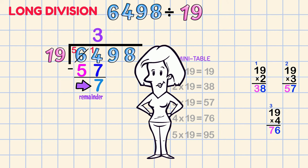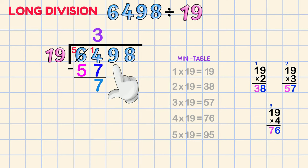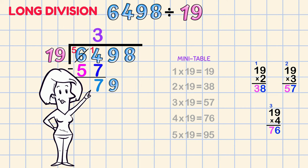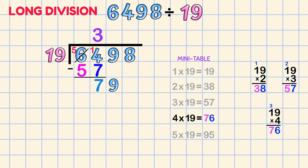We need to put those digits together to make the next number. We bring that next digit, the 9, down here and put them together. Now for our next question, 19s into 79. Look at the mini table! 4 x 19 is 76. Put a 4 on the answer line. And 76 goes down here. Now we do that subtraction to find the remainder. That's easy!